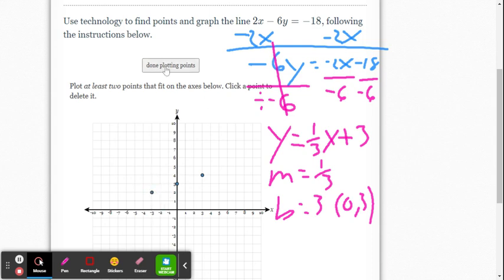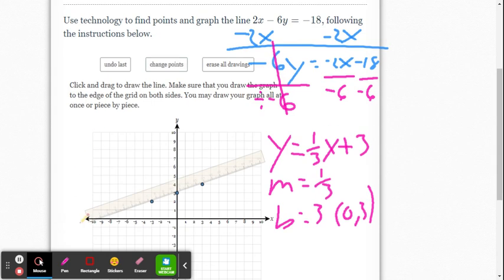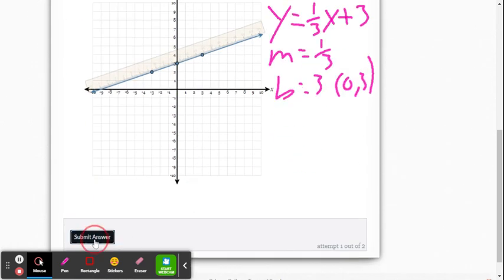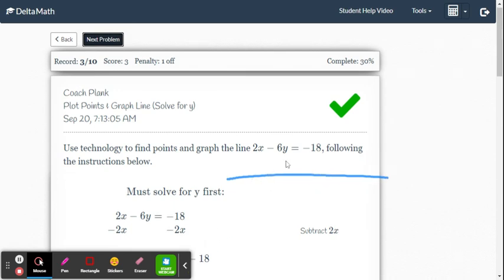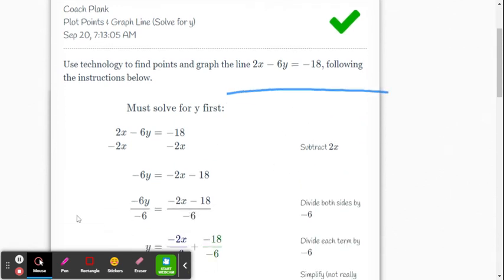And done plotting points. And then we take our straight edge and we go right through it. There's our line. Scroll down here and say submit our answer. And we get the check mark. And that's all there is to it for this assignment.